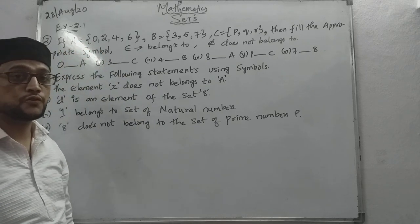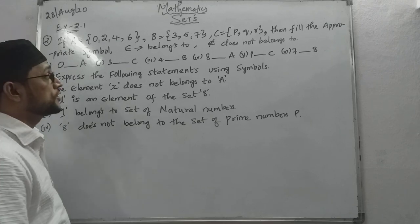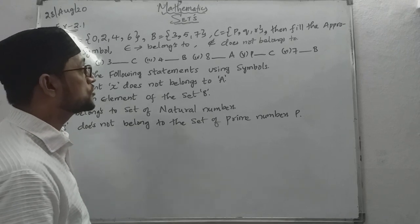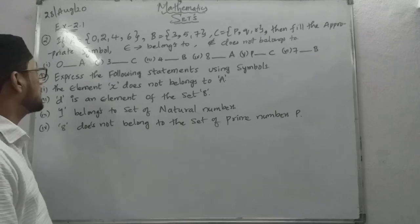If set A equals 0, 2, 4, 6, 8, set B equals 3, 5, 7, set C equals P, Q, R, then fill the appropriate symbol.